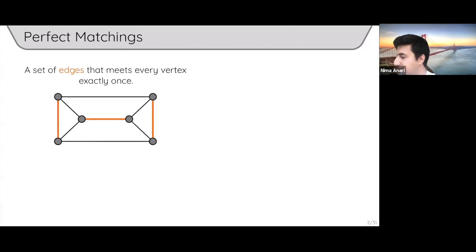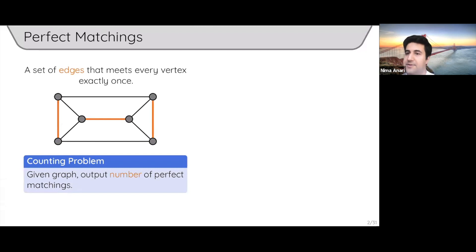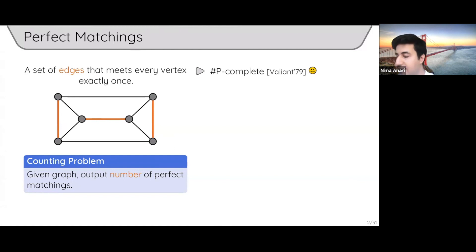Let me start with a motivational problem — hopefully everybody knows what perfect matchings are. You're given a graph; a subset of edges is a perfect matching if you visit every vertex exactly once. There is an important algorithmic problem you can ask about perfect matchings: design an algorithm that takes a graph and outputs the number of perfect matchings. This was the first major problem whose counting version was shown to be #P-complete.